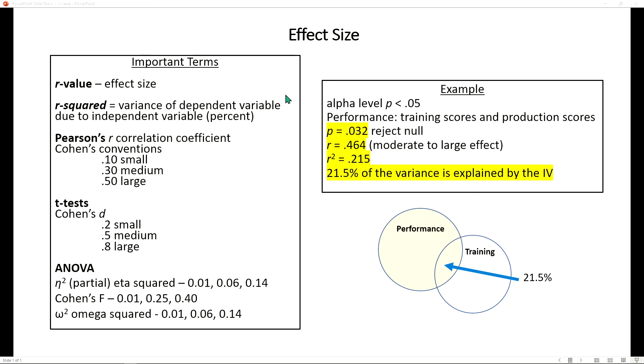Also, if you run a regression, you can have an R squared value which is the variance of the dependent variable due to the independent variable. This can also be translated into a percentage, which I'll show you shortly.